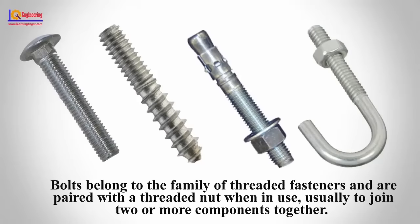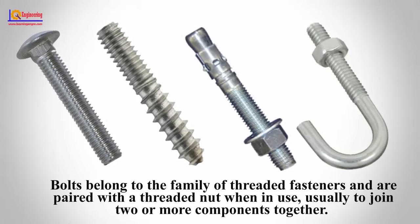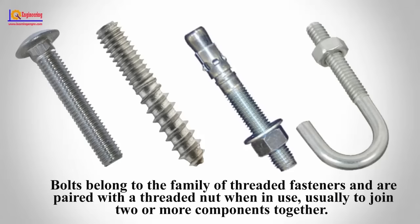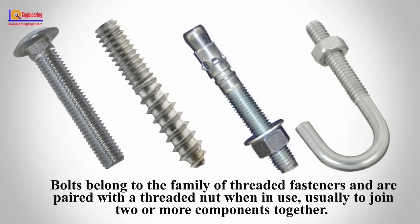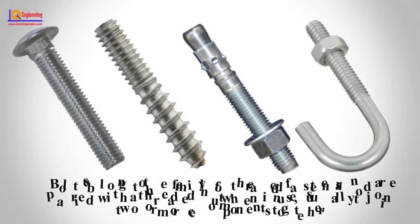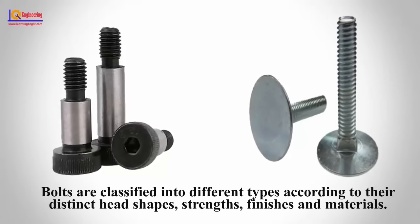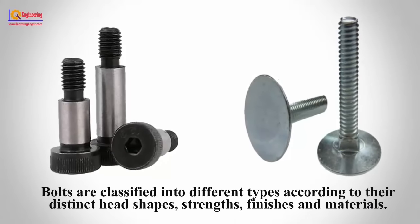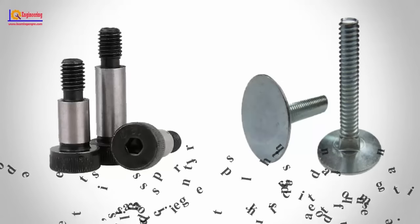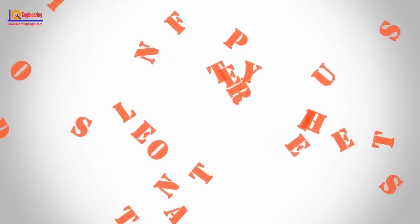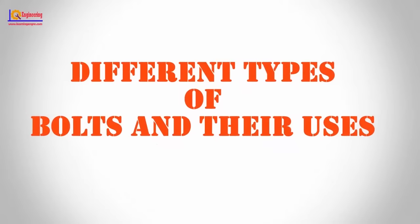Bolts belong to the family of threaded fasteners and are paired with a threaded nut when in use, usually to join two or more components together. Bolts are classified into different types according to their distinct head shapes, strength, finishes, and materials. In this video, I will brief you on some common types of bolts and their uses.